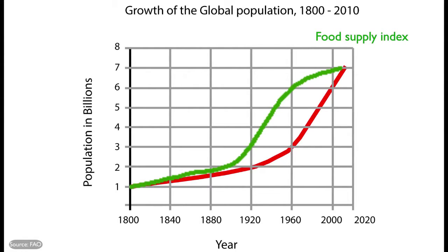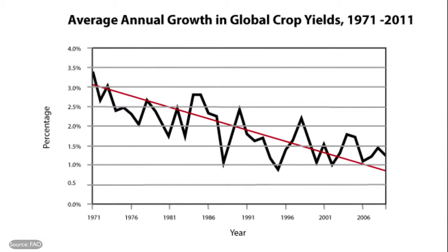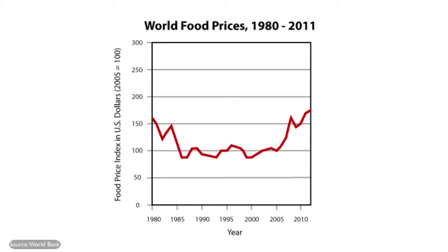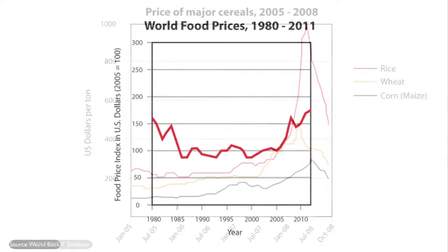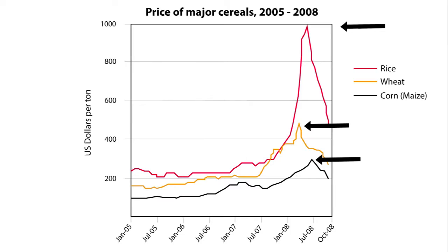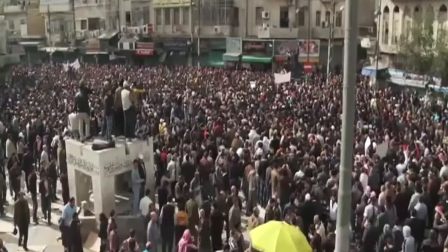The growth of food production outstripped the rates of population growth. However, there are signs that Malthus's conclusions were not entirely wrong and that the increase in food production is slowing. In the first decade of the 21st century food prices increased quite rapidly. Between 2005 and the summer of 2008, the prices of wheat and corn tripled and the price of rice increased five-fold, leading to food riots in nearly two dozen countries, mainly in the developing world.